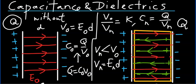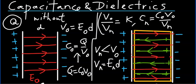C sub n will simply become C0·V0 over Vn. But we do know this ratio, V0 over Vn, is quite simply the dielectric constant of that dielectric. So, this result can be quite simply written in the following manner.